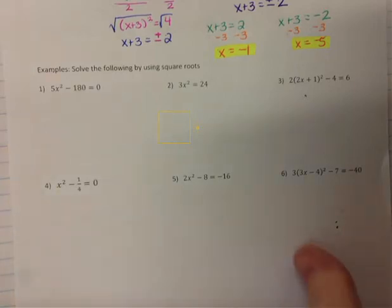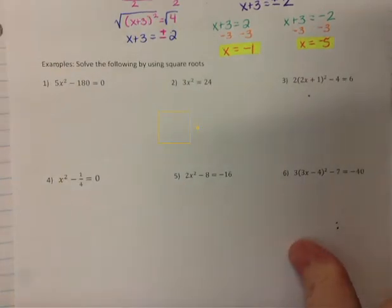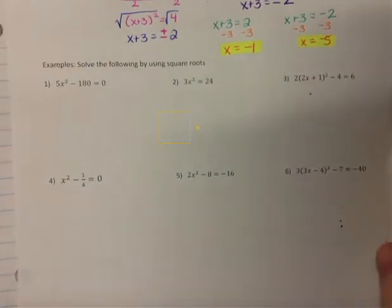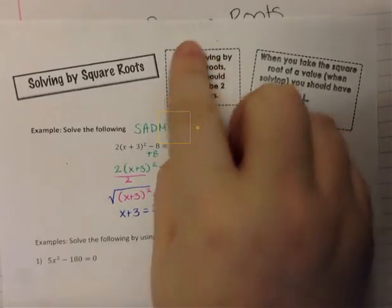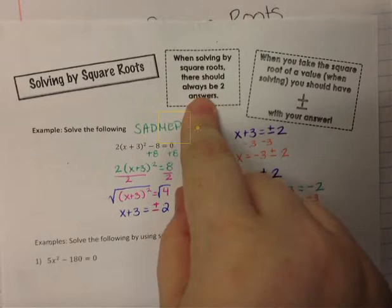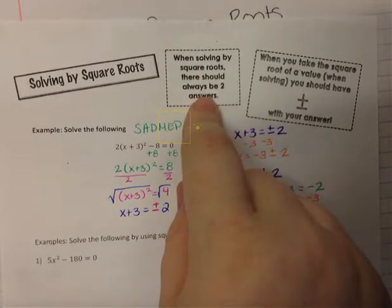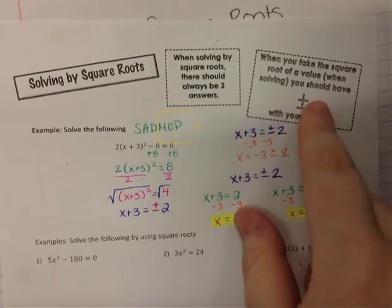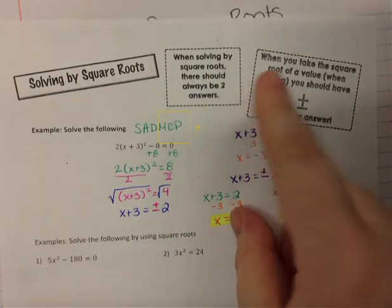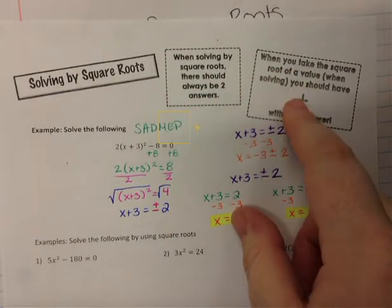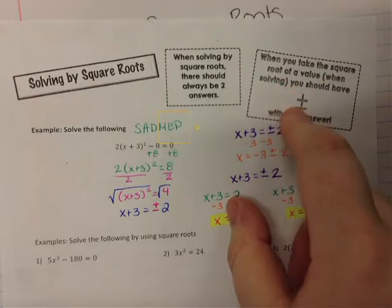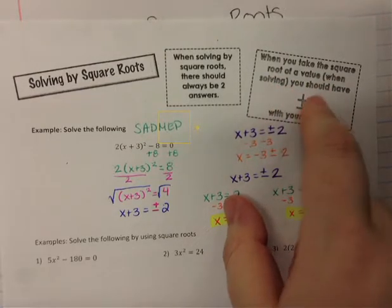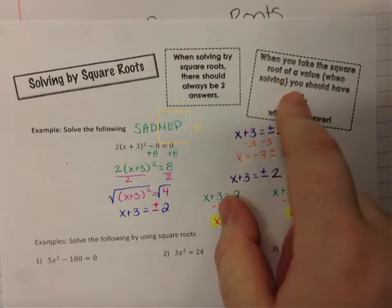This video is on solving quadratics. We're going to be solving by square roots again. In a previous video I explained that when solving by square roots there should always be two answers. We have to make sure that when we're doing the inverse of squaring, which is square rooting, we end up with a plus or minus on our value.